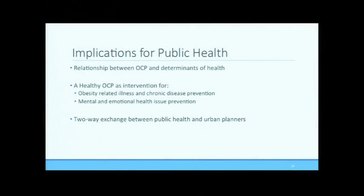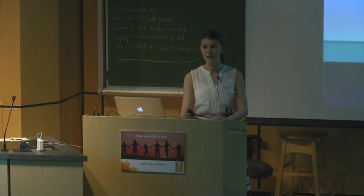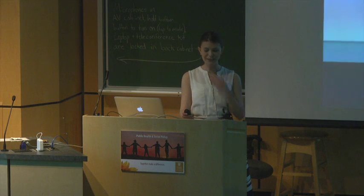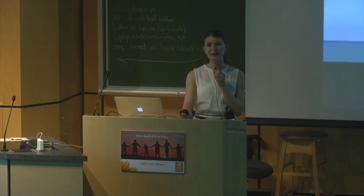The implications for public health of my project are hopefully great. My project has highlighted the relationship between the OCP and determinants of health and suggests a link between the OCP and manifestations of these determinants within a community. As obesity and related chronic illness remain a significant public health concern, the use of the OCP as prevention through active transportation promotion and community food strategy is also hopeful. The OCP could also be used as a promising prevention strategy for mental and emotional health issues by promoting conviviality and social connectedness, access to green and natural space, and enhancement of the built environment. The importance of a bi-directional and integrated working relationship between community planners and public health was probably the most significant message I took away from my project and practicum, as a more common understanding of public health and community planning will hopefully help to ensure the success of local government initiatives and ultimately help to create healthier communities.